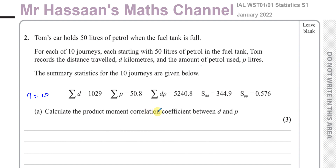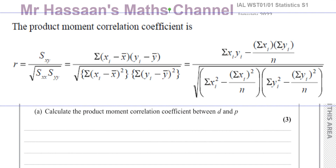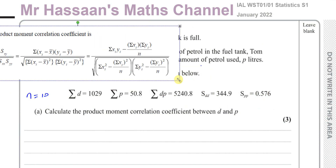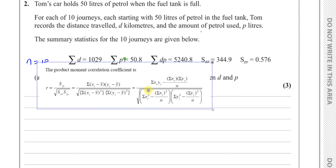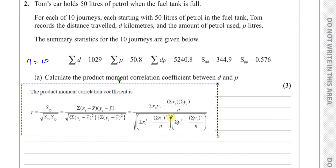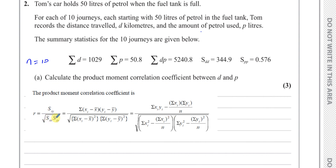Let's calculate the product moment correlation coefficient between d and p — PMCC, given the symbol R. There is a formula in the formula book which is as follows: R equals SXY divided by the square root of SXX times SYY.